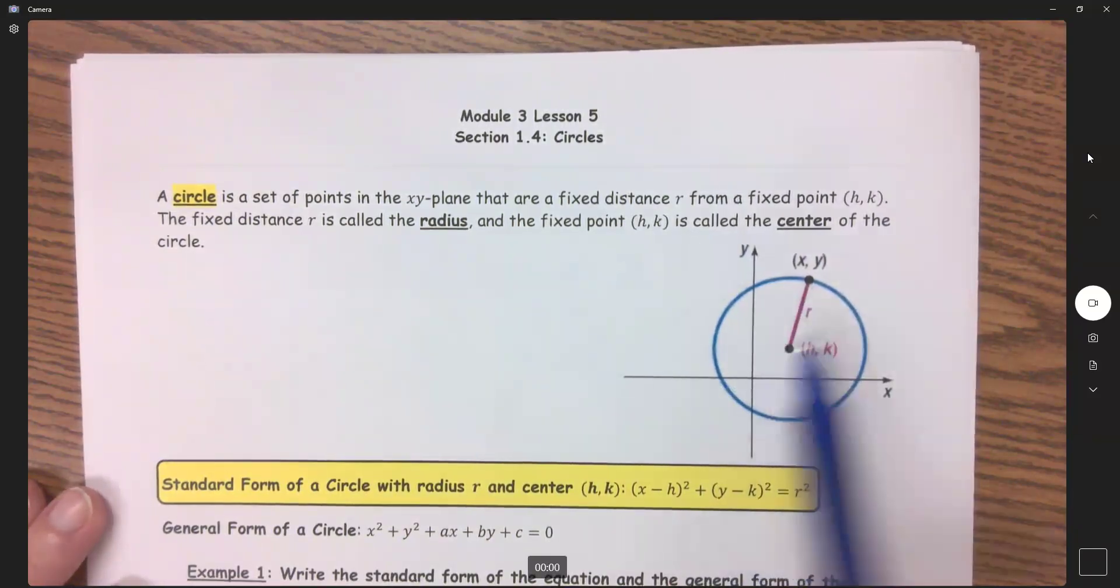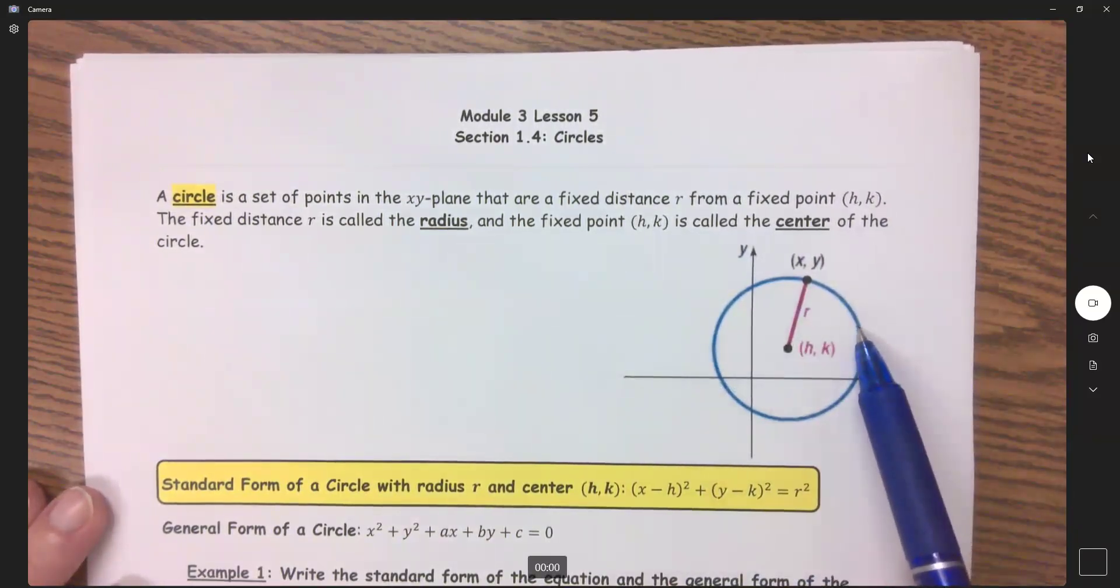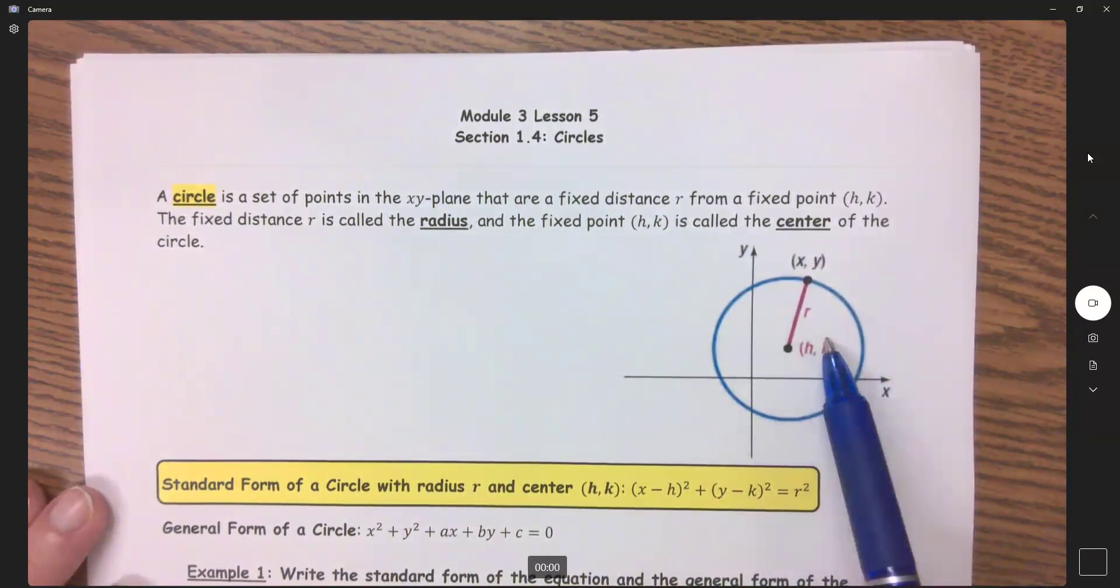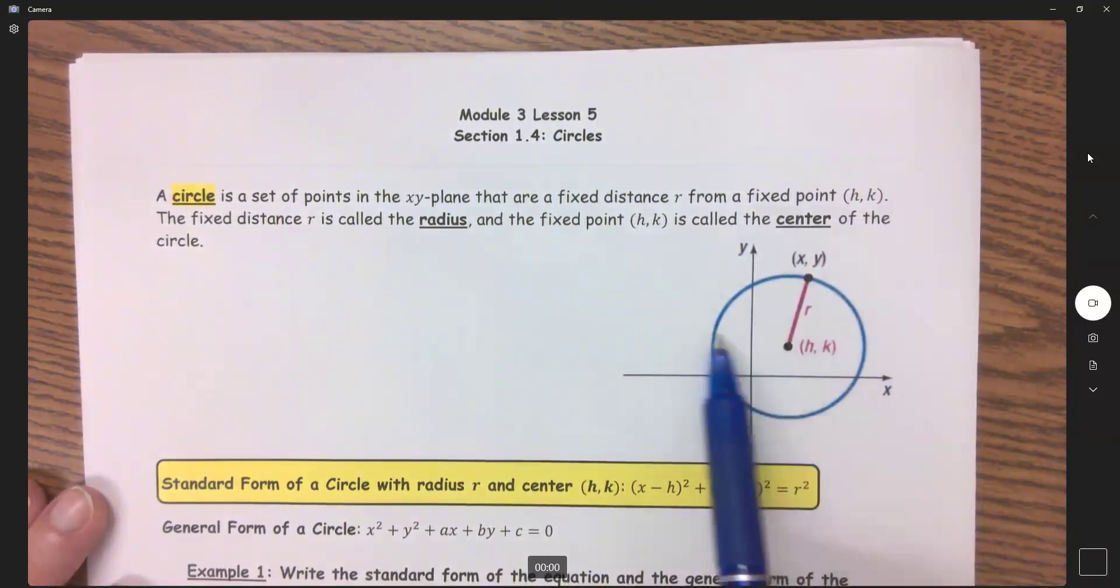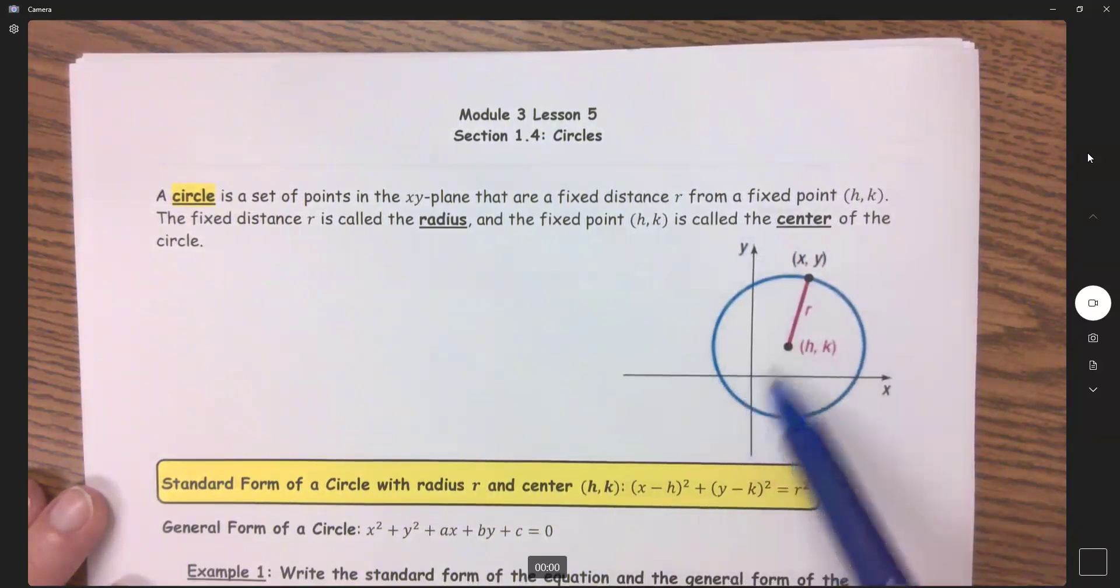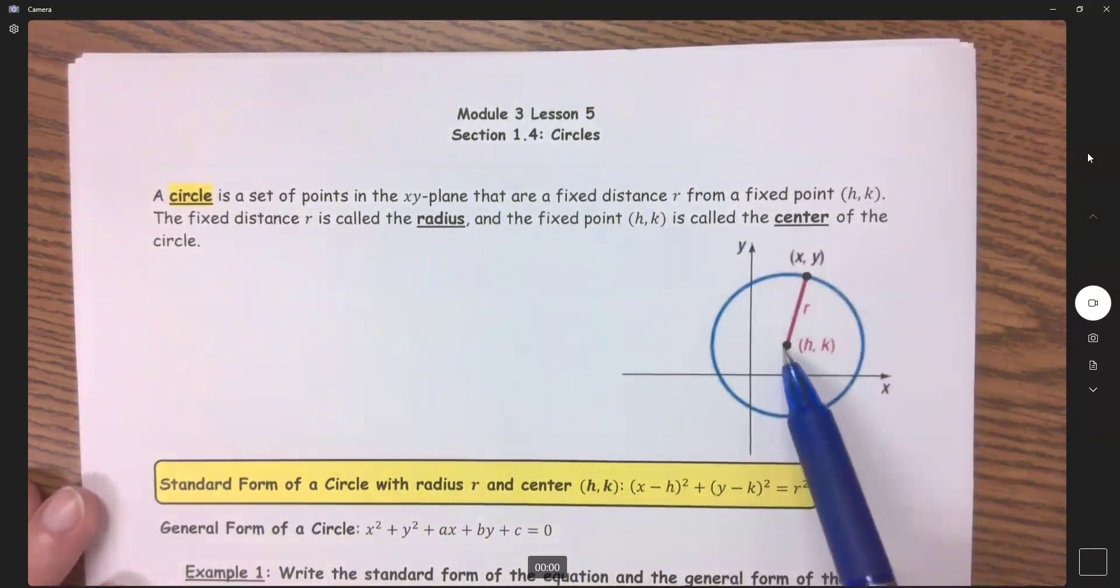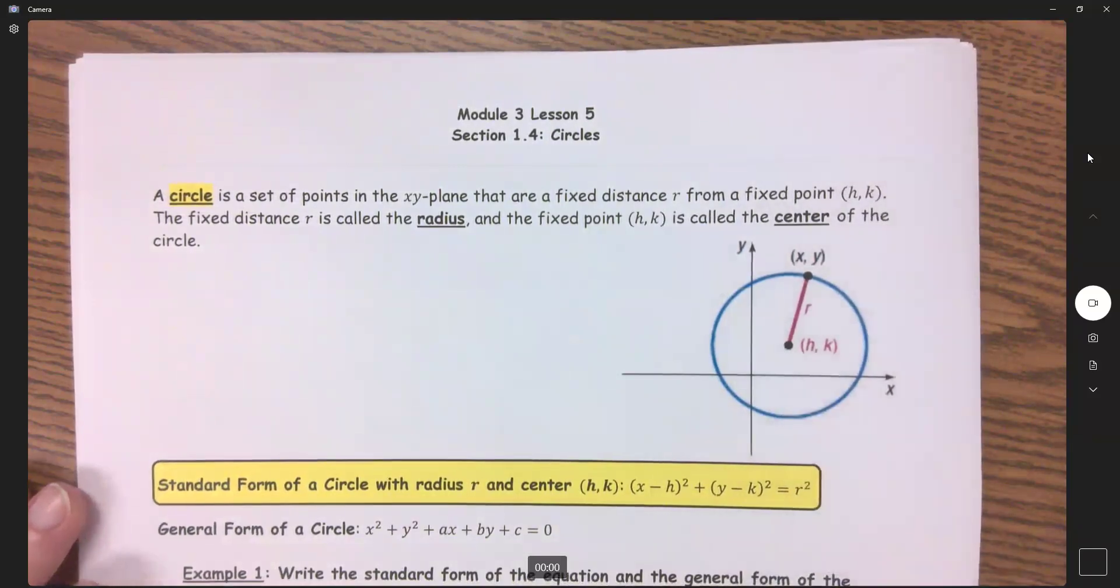So if this radius is 5, if I put another point on the circle, this would also have a distance of 5. This point over here would also have a distance of 5. And this point here would have every point has a distance of 5 from the outside to the center.